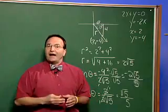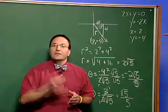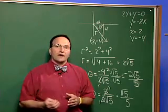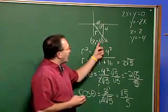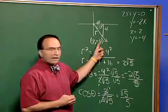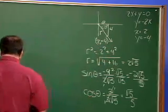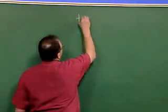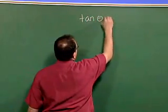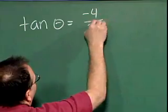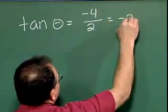Now, let's find the tangent. The tangent of theta is equal to y over x. My y is negative 4, and my x is 2. So my tangent of theta is equal to negative 4 over 2, which is negative 2.